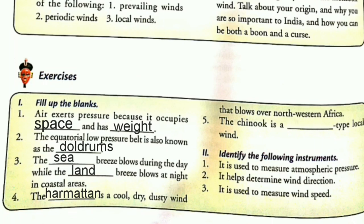Next: the Chinook is a blank type local wind. Answer: the Chinook is a fohn type local wind.